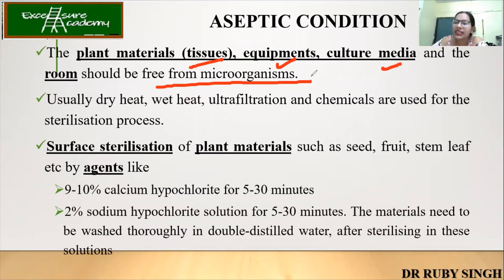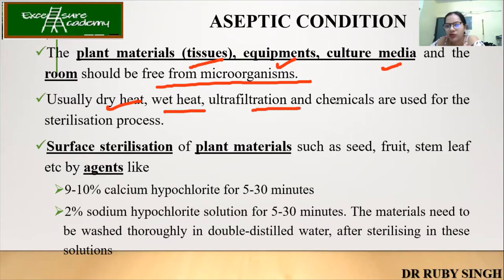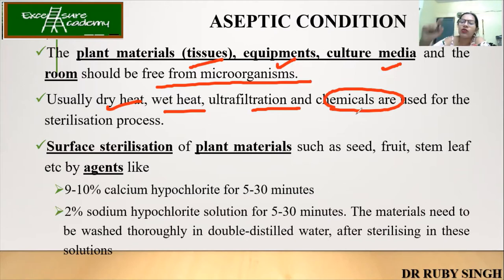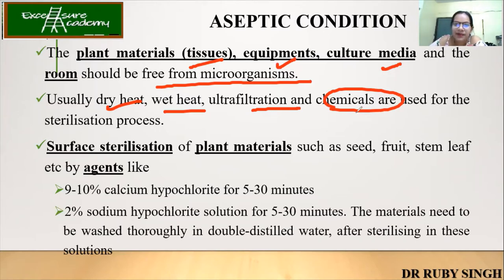So what are the methods we use? Dry heat, wet heat, ultra-filtration, and chemicals are used for the sterilization process. We are going to discuss what kind of chemicals are used, and this is something you need to remember because this comes for one-mark questions.